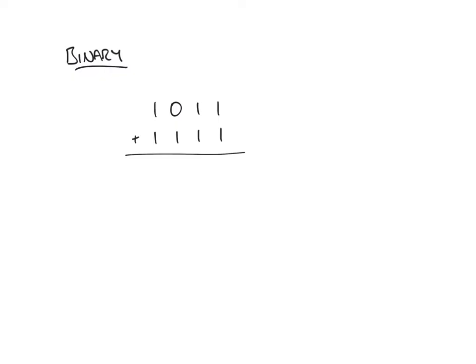Let's look at a binary example now. We are going to add the number 1011 to the base of 2 to the number 1111. Before we begin, let's remind ourselves that binary numbers are to the base of 2, so they only have 2 permissible digits: 0 or 1. Let's begin by looking at the right-hand column, where we have 1 plus 1, which would give us 2. Straight away, 2 is not a permissible digit, so we have to carry the equivalent of our base to the next column.